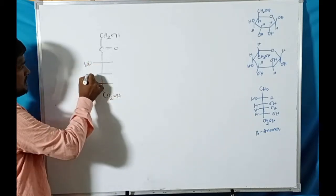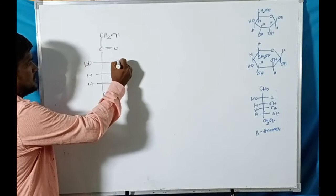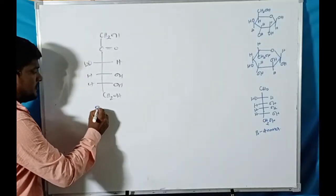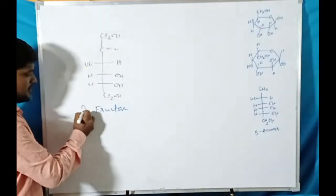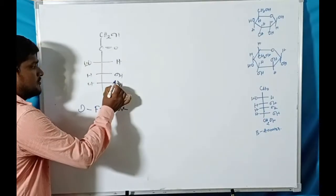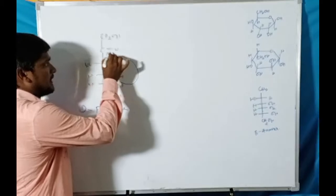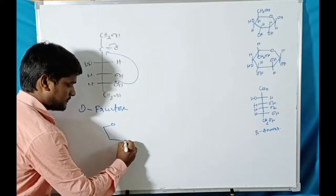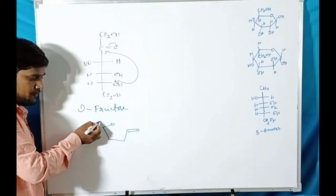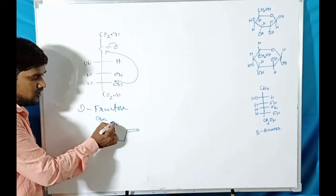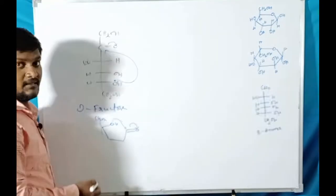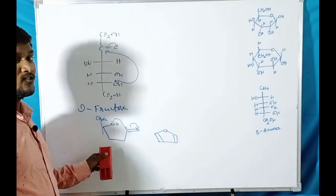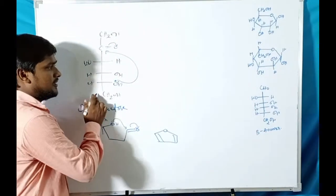Here is the open-chain fructose structure: CH₂OH, OH, H, H, H, OH, H, OH, H, H. A ketone functionality is present, so this is fructose — specifically D-fructose. The fifth carbon atom's oxygen attacks the second carbon atom of the carbonyl compound. This forms a five-membered cyclic ring. Since this five-membered ring is derived from furan, it is called a furanose structure.